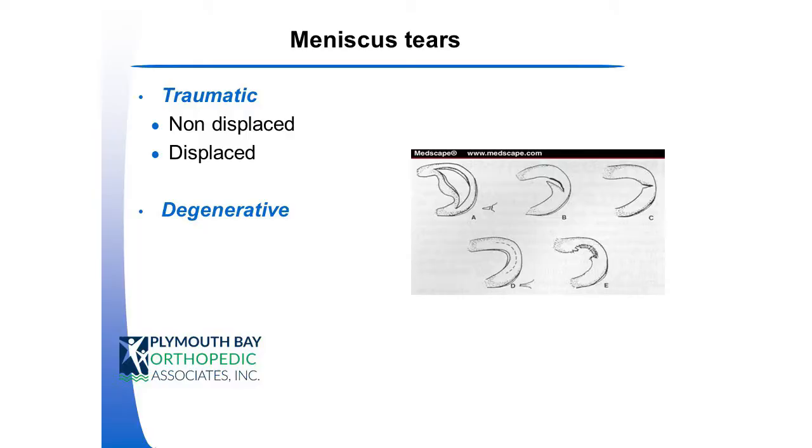The traumatic tears are either displaced or non-displaced. Some non-displaced ones can be managed non-operatively — if a flap tear were to flip back into place and scar in and the symptoms go away, it doesn't necessarily require surgery. For degenerative tears, you tend to treat the arthritic condition more so than the meniscal symptoms, unless they're truly meniscal in nature. If the patient presents with dull, achy pain you can assume it's arthritis, whereas if it's mechanical symptoms you may consider addressing the meniscus even if there are already arthritic signs on imaging.